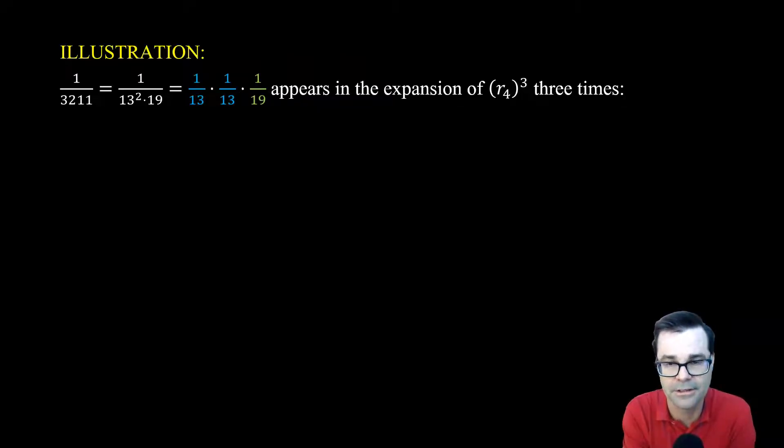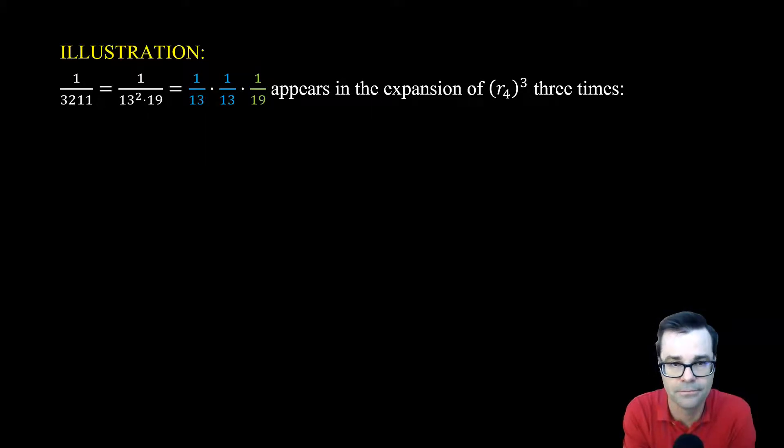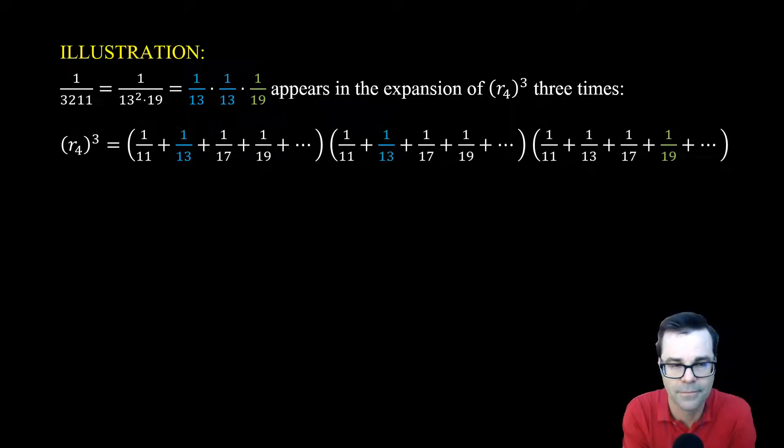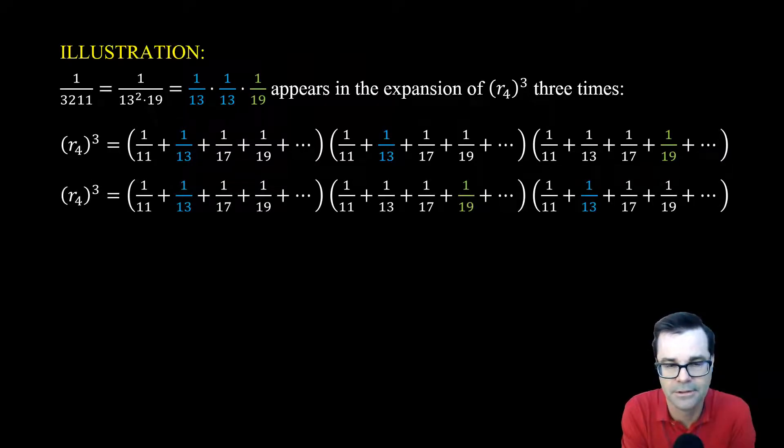In fact, it's going to show up three times, as we'll see here. So here's one way that it shows up. You could have the 1 thirteenth from the first factor, 1 thirteenth from the second factor, and 1 nineteenth from the last factor. There's two other ways that it's going to show up. The thirteenth could come from the first and the last, and the nineteenth from the middle factor. And then the last way, we could have the nineteenth in the first factor, and the thirteenth in the other two.